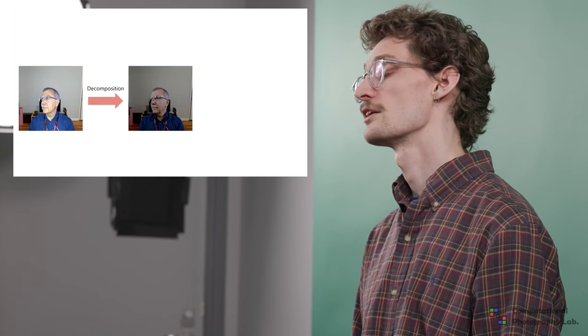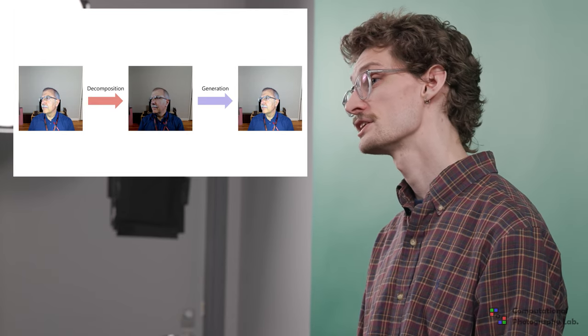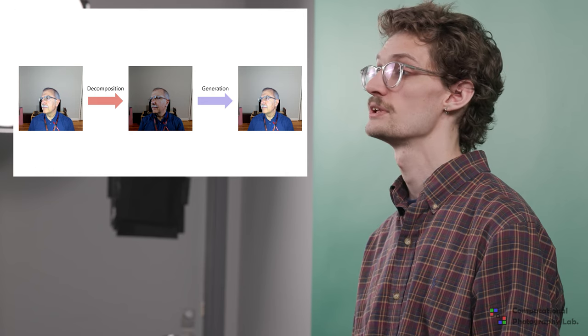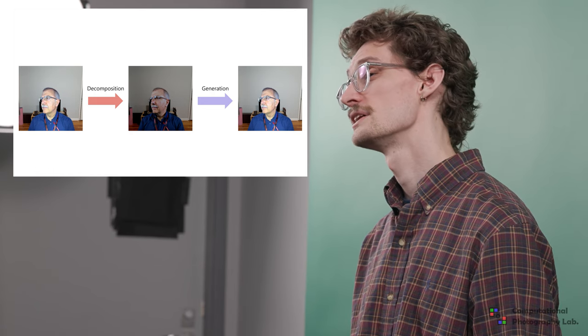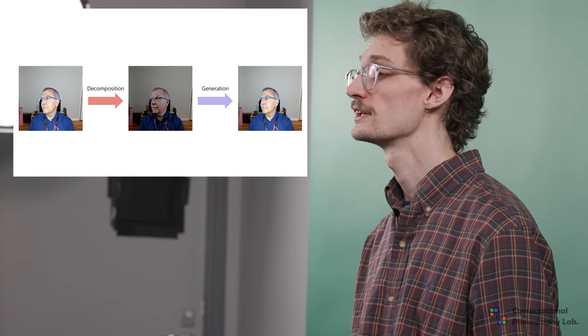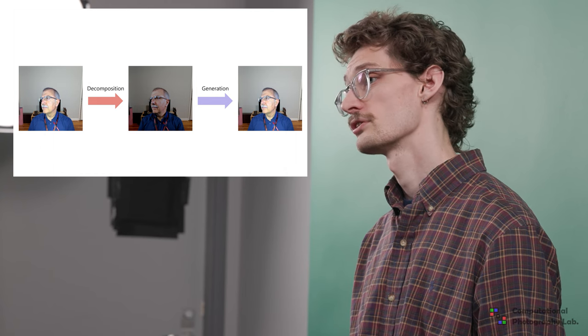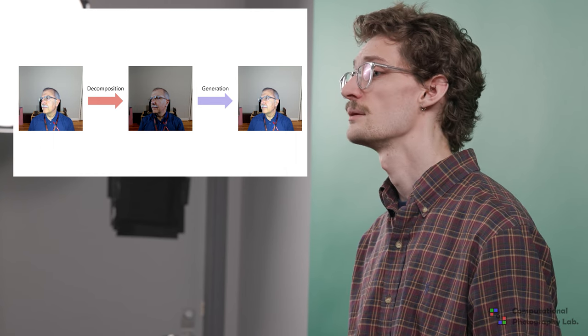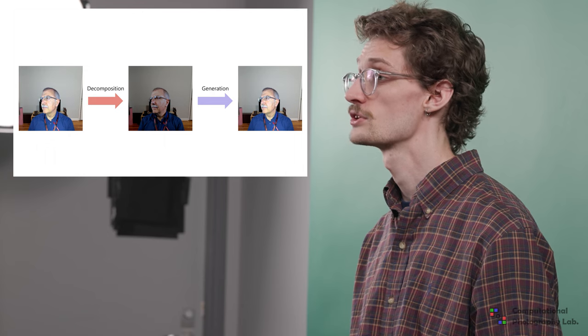An important aspect of flash decomposition and generation is the cyclic relationship between them. In other words, if we were to decompose a flash photograph to yield an ambient image, our generation network should be able to transform that ambient image back into the original flash photograph.